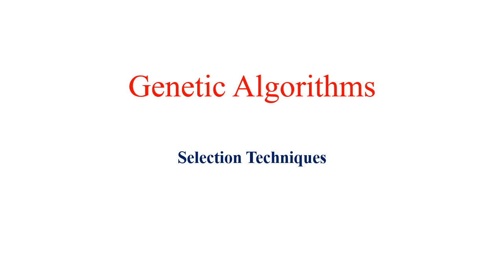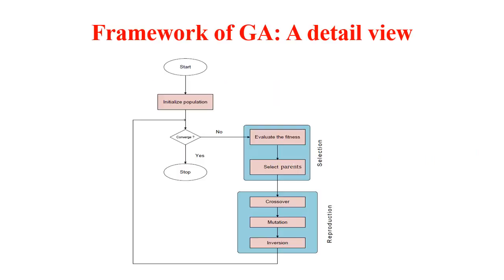Genetic algorithms mimic natural selection and evolution. On successive generations, the best individuals from the current population need to be selected to produce a better next generation. That is the selection technique we are going to discuss in this framework of GA.